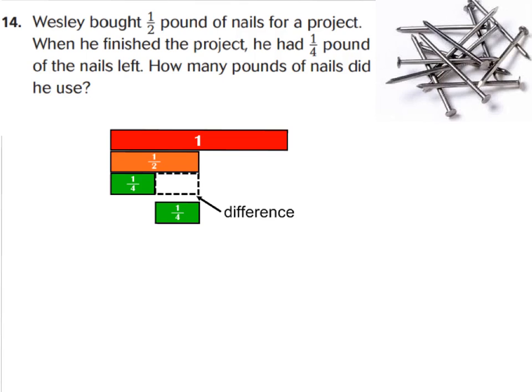All right, so let's take a look at number 14. It says, Wesley bought 1 and 1 half pound of nails for a project. When he finished the project, he had 1 fourth pound of the nails left. How many pounds of nails did he use? Okay, those are clue words that we're subtracting. Because, he's taking it away from his original 1 and 1 half of a pound. So, I have the model right down here for you. We have 1 and 1 half, and then we did minus 1 fourth.